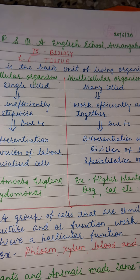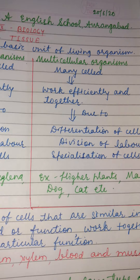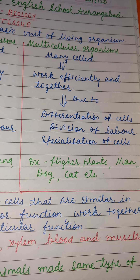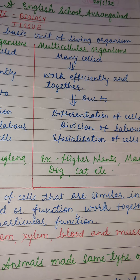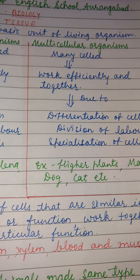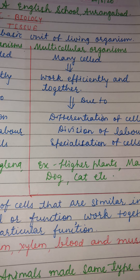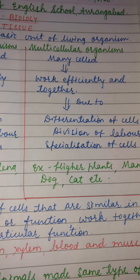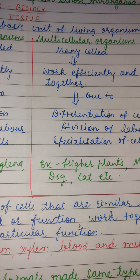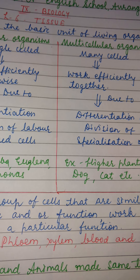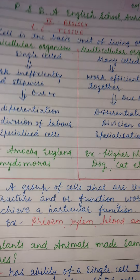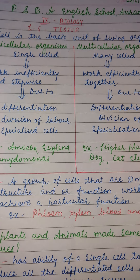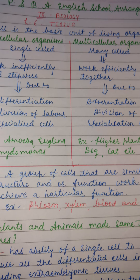In multicellular organisms, as they are made up of many cells and have different types of systems, there is differentiation of cells, division of work, as well as specialization of cells. For example, nerve cells carry messages, blood flows to transport oxygen, food, hormones, and waste materials in human beings. Cells specializing in one function group together in the body, meaning a particular function is carried out by a group of cells located in a definite place in the body.